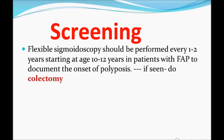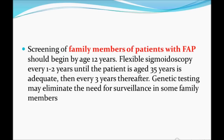For screening family members — if a patient is diagnosed with FAP and asks about advice for their brother — screening should begin at age 12 years with flexible sigmoidoscopy every one to two years until age 35. If no lesion is found, then every three years thereafter. Genetic testing may eliminate the need for surveillance in some family members.